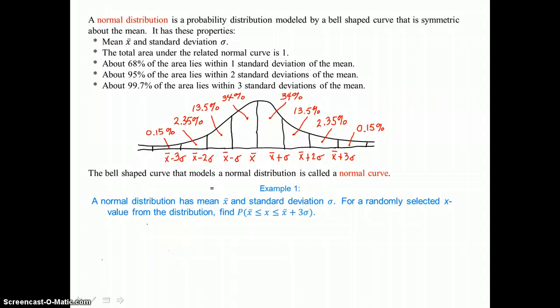The total area under the related normal curve is 1. About 68 percent of the area lies within one standard deviation of the mean, and you can see that by adding 34 percent on the left side of the mean and 34 percent on the right side of the mean. That sums to 68 percent.